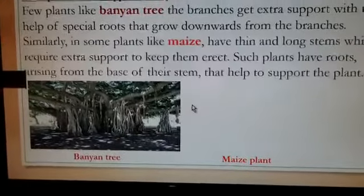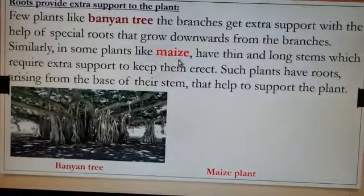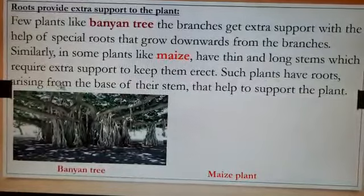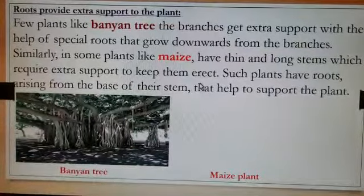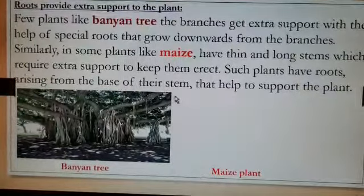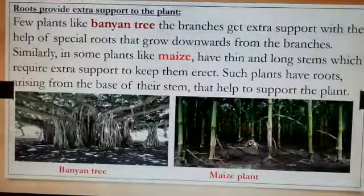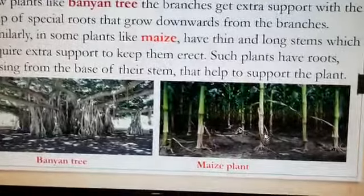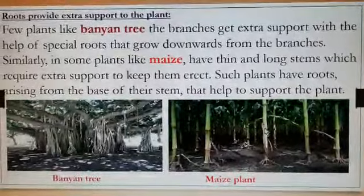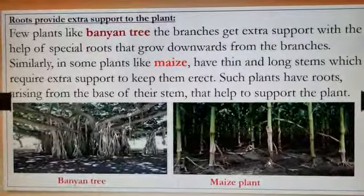Next is the maize plant. Some plants like maize have very thin and long stems which require extra support to keep them erect — erect means straight. Such plants have roots arising from the base of their stem that help support the plant. Observe the maize plant here: because the stem is very long and thin, extra support is provided by the roots at the base of the stem.